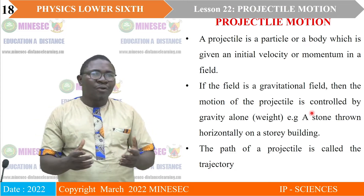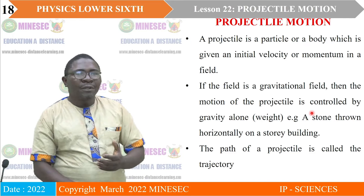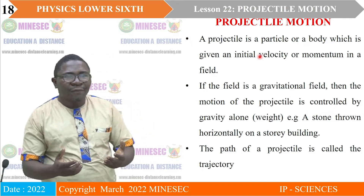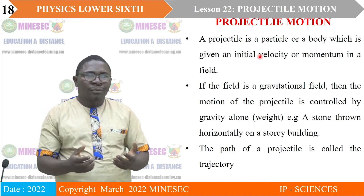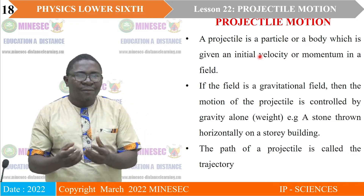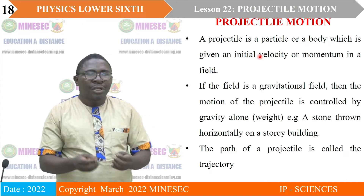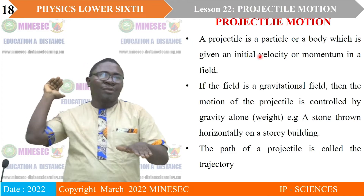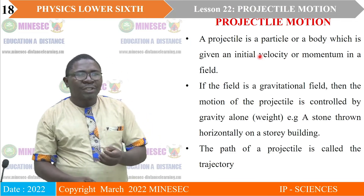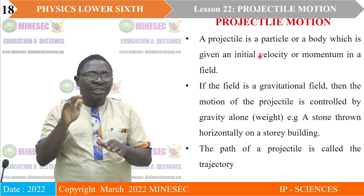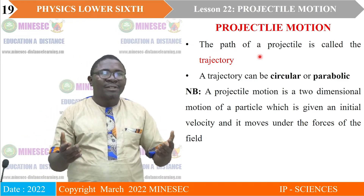A projectile is a particle or body which is given an initial velocity or momentum in a field. If the field is a gravitational field — for example, that of the Earth or any other massive object — then the motion of the projectile is controlled by gravity alone, what we call the weight. A stone thrown horizontally from a tall building is an example. The path of the projectile is called a trajectory.